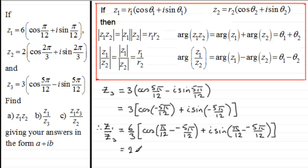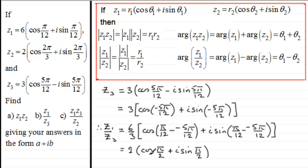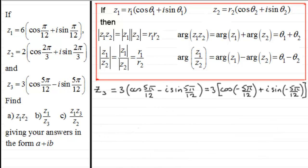So 6/3 = 2, and π/12 + 5π/12 = 6π/12 = π/2. We have 2·(cos(π/2) + i·sin(π/2)). Cos(π/2) = 0 and sin(π/2) = 1, so the result is simply 2i.